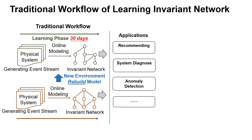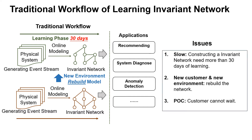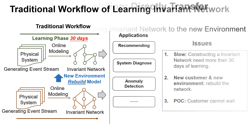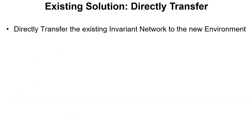From our real-world system experiment, the learning phase of the environment networks generally takes more than 30 days. This long-time learning process makes the environment network model very inefficient when dealing with a new system environment or POC request. The existing solution when facing a new environment is to directly transfer an old model from an old environment.